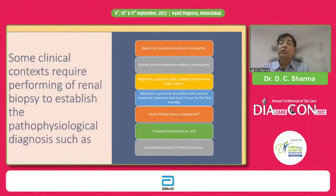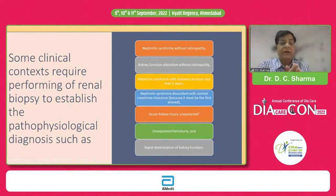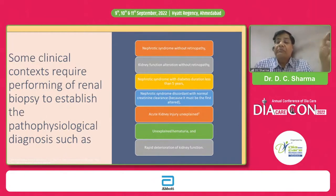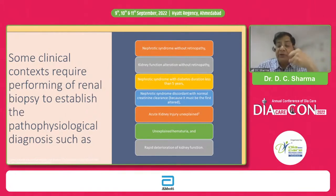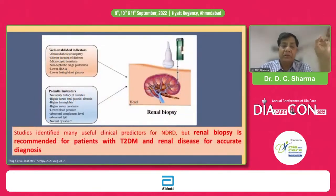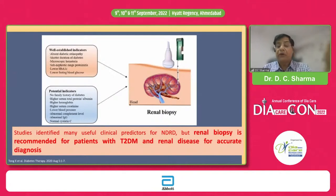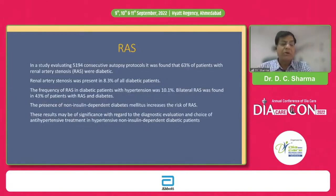Once you suspect non-diabetic kidney disease, a renal biopsy should be performed to establish the diagnosis. The clinical markers warranting biopsy include: nephrotic-range proteinuria or nephrotic syndrome without retinopathy, declining kidney function without retinopathy, nephrotic syndrome with shorter duration of diabetes, nephrotic syndrome discordant with normal creatinine clearance, unexplained acute renal lesion in a diabetic patient, unexplained hematuria and microscopic findings, and rapid deterioration of renal function. Renal biopsy is recommended for type 2 patients under these circumstances.